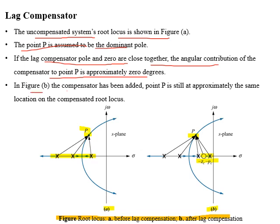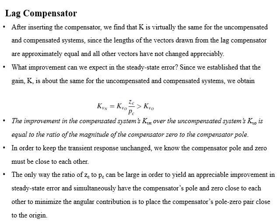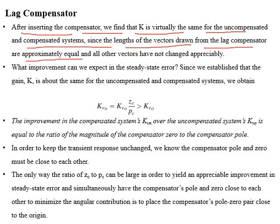In figure B, a compensator has been added and point B is still approximately the same location on the compensated root locus. After inserting the compensator, we find that gain K is virtually the same for both compensated and uncompensated systems, because the lengths of the vectors drawn from the compensator pole and compensator zero are approximately equal, and all other vectors have not changed appreciably.